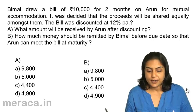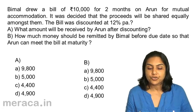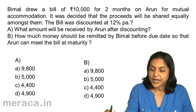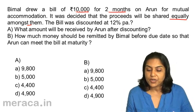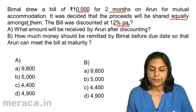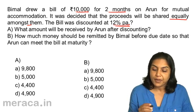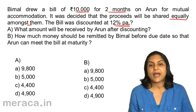Let us test our understanding of accommodation bills with a small problem. Bimal drew a bill of Rs.10,000 for two months on Arun for mutual accommodation. It was decided that the proceeds would be shared equally amongst them. The bill was discounted at the rate of 12% per annum. What amount will be received by Arun after discount? How much money should be remitted by Bimal before the due date so that Arun can meet the bill at maturity?